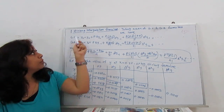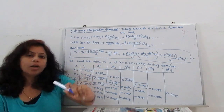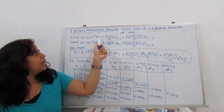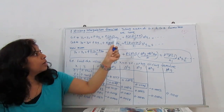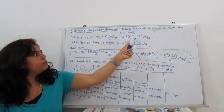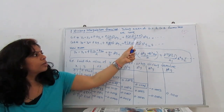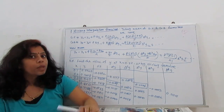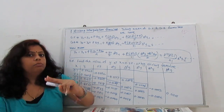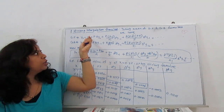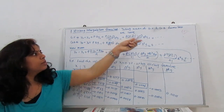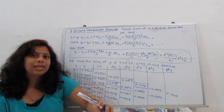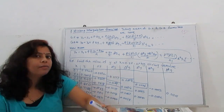Gauss forward formula: y(p) = y0 + p·Δy0 + p(p-1)/2·Δ²y₋₁ + p(p-1)(p+1)/3!·Δ³y₋₁ + ... Every term repeats two times: y0, Δy0, Δ²y₋₁, Δ³y₋₁, then the next two terms Δ⁴y₋₂, Δ⁵y₋₂, and so on.